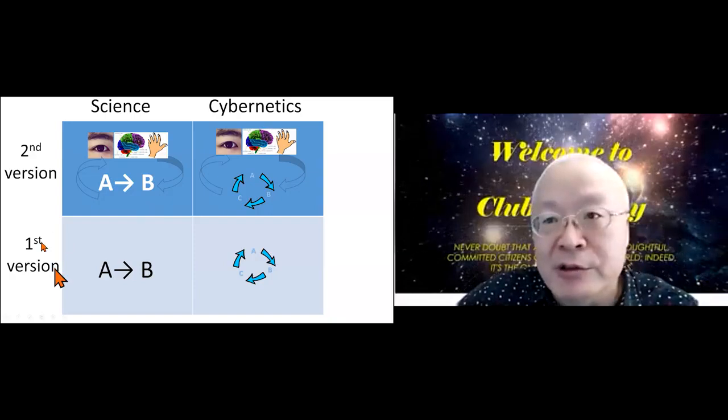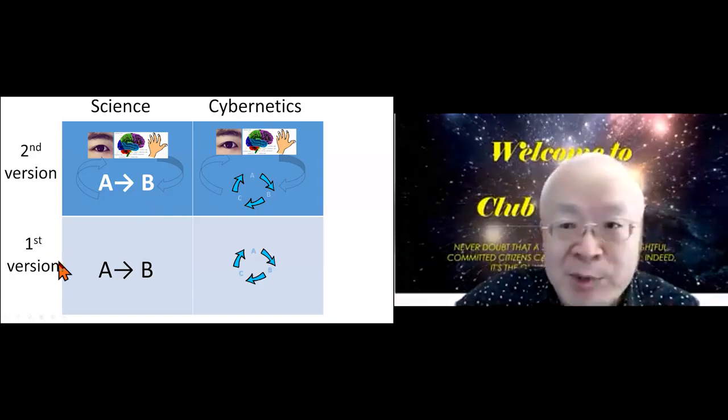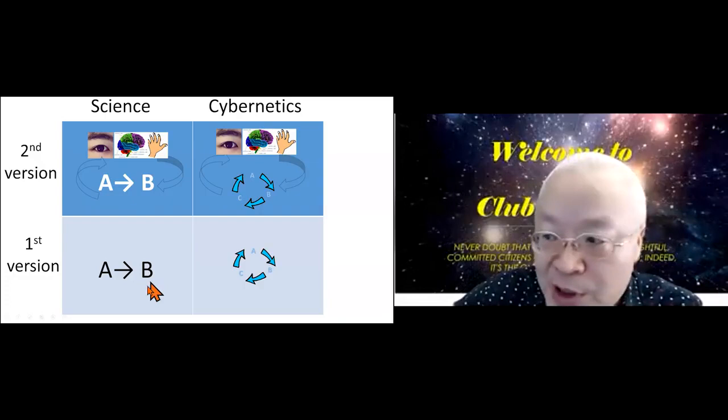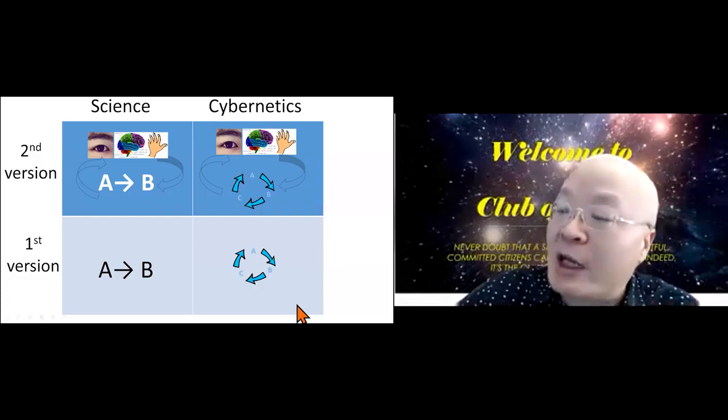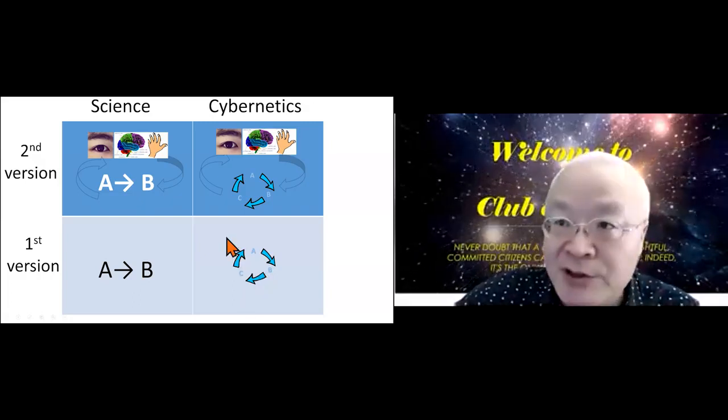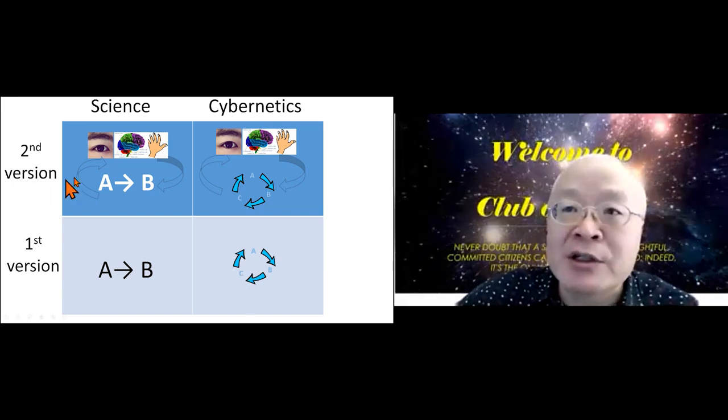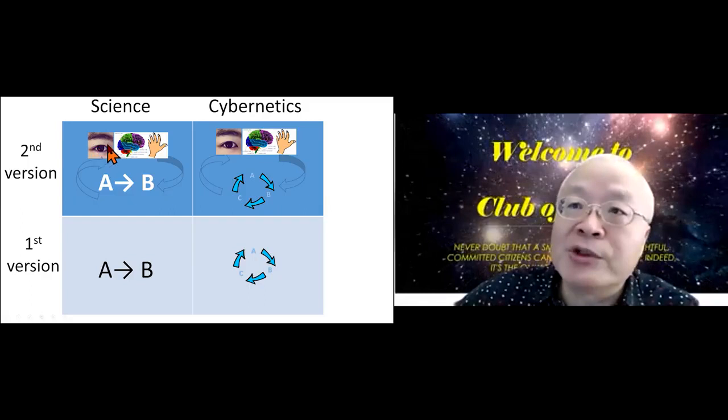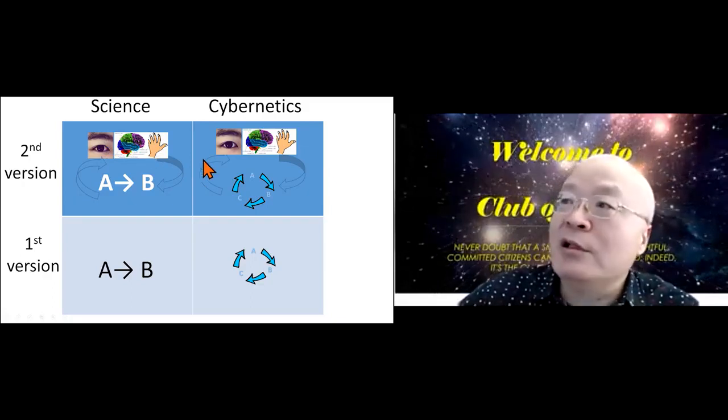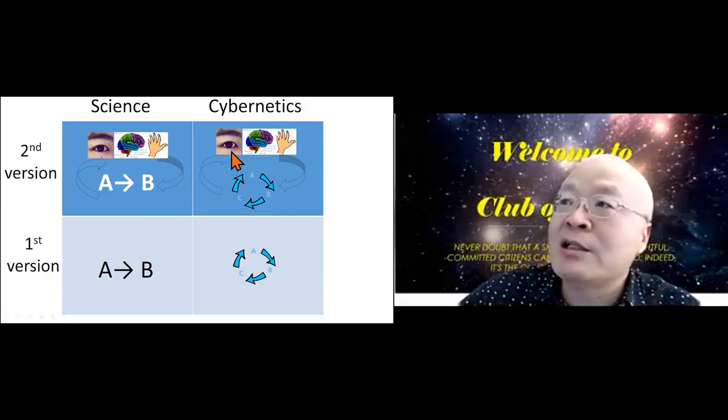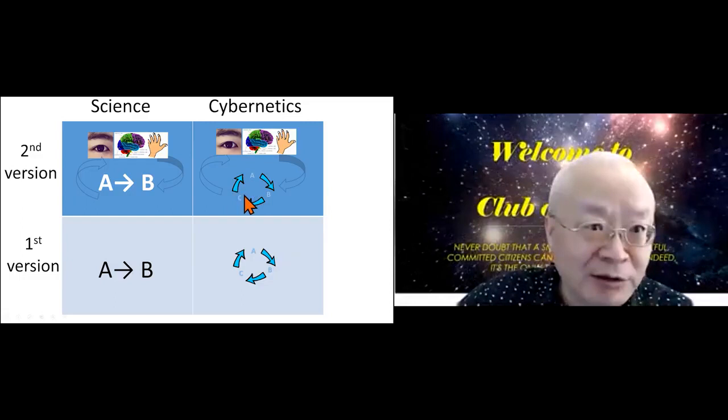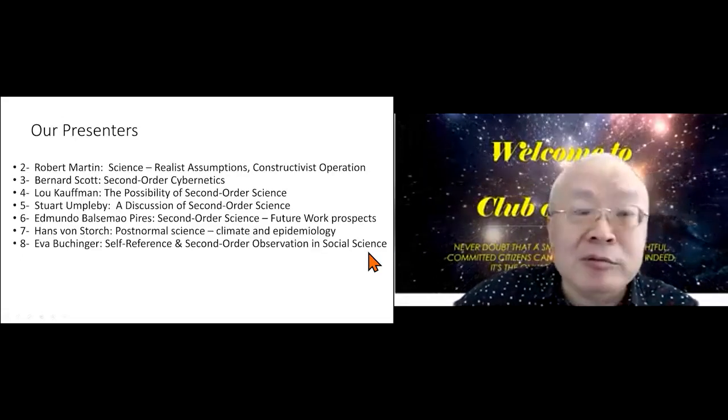Here is the simple summary of my perception. When you have your first version of science, you are talking about A causes B. When you have your first version of cybernetics, you are talking about a system in which you have circular causalities. In the second version of science, you included OTA, observer, thinker, actor, not just observer. The same thing here. When you are talking about the second order of cybernetics, you focused on OTA and the system being acted on, not just observed. That's my opening.